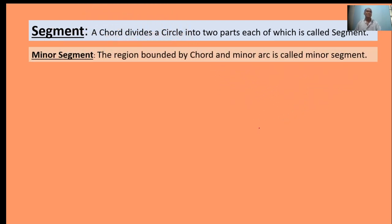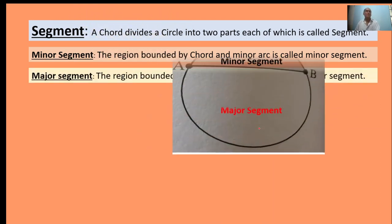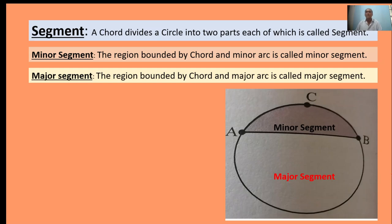Segment: a chord divides a circle into two parts, each of which is called a segment - minor segment and major segment. Here in the figure, this is a circle. AB is a chord dividing it into two parts. This is the minor segment, and this is the major segment.